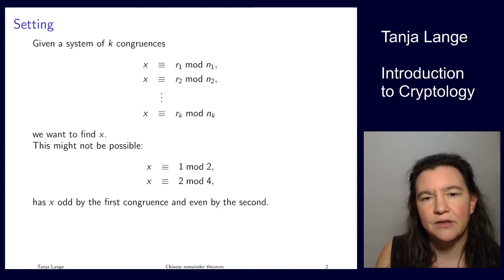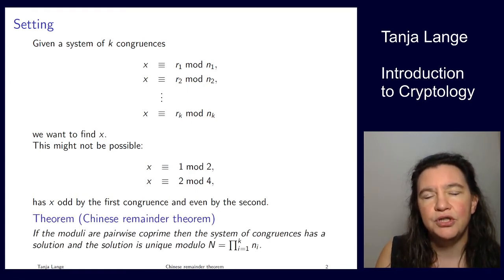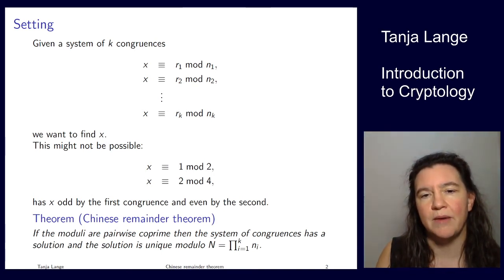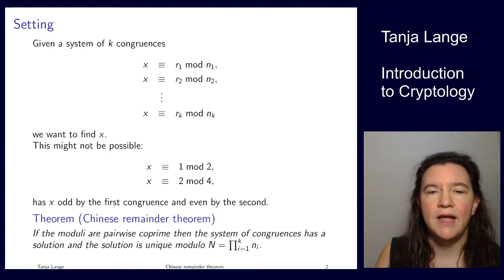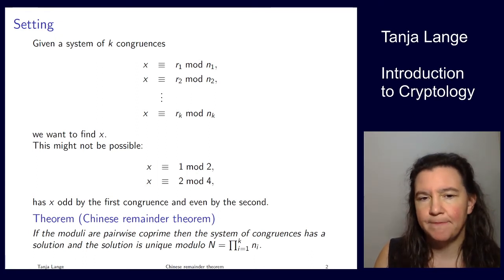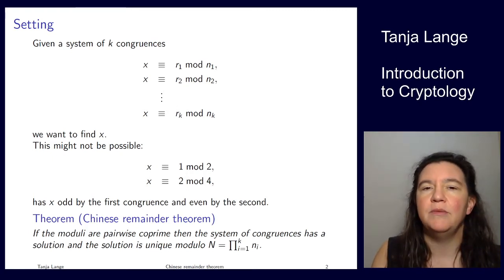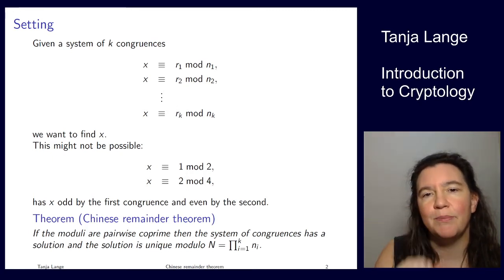Now what the Chinese Remainder Theorem is saying is that under the condition that the moduli, these nᵢ, are pairwise coprime, then the system of congruences has a solution and it's unique modulo the product of these moduli. Now pairwise coprime doesn't just mean taking the GCD of all these numbers...